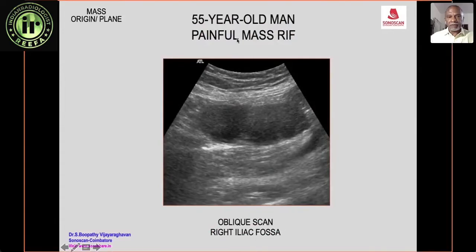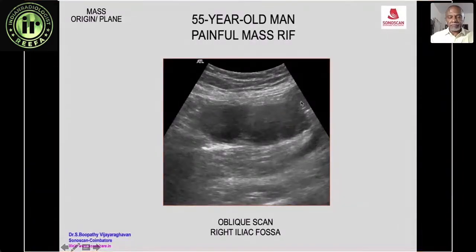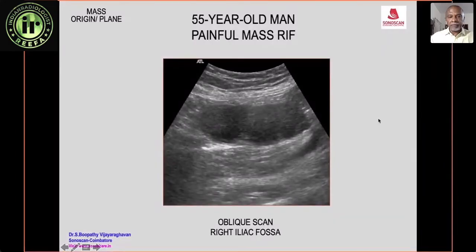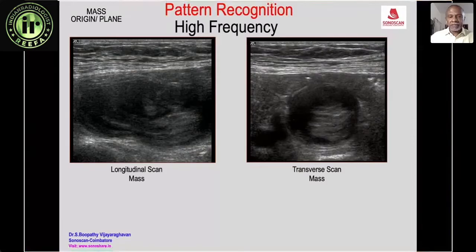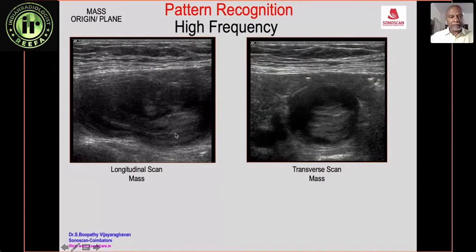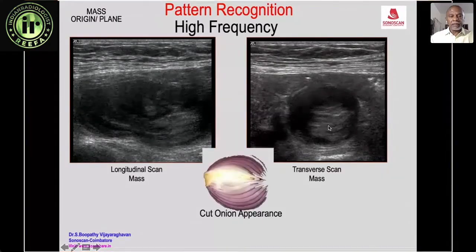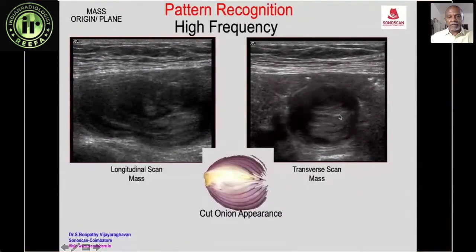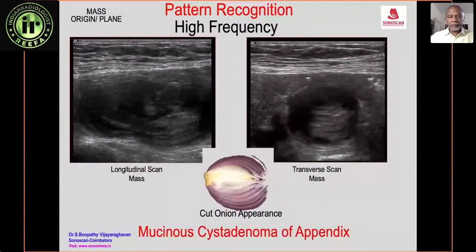This is a 55-year-old man with a painful mass in the right iliac fossa. On the convex probe the features may be unclear, but shifting to a high-frequency scan reveals multiple layers — the cut-onion appearance. The cut-onion appearance in the right iliac fossa is pathognomonic of mucinous adenocarcinoma of the appendix due to temporal deposition of mucin.